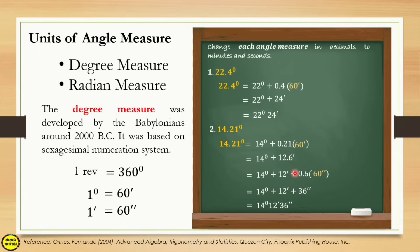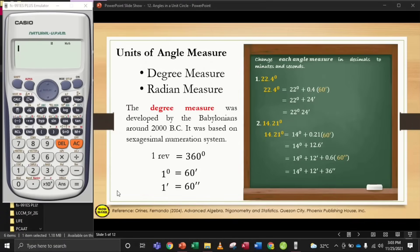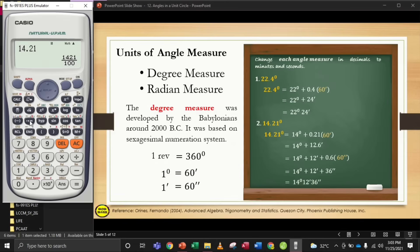Using a calculator, you can check the answer. Type 14.21, press equals, then press the degree-minute-seconds symbol on your scientific calculator. It will directly give you 14 degrees, 12 minutes, and 36 seconds — confirming our answer. However, you still need to learn how to do it manually so you understand why the answer is 14 degrees, 12 minutes, and 36 seconds. The calculator can be used as a final check.